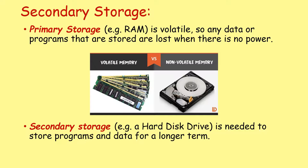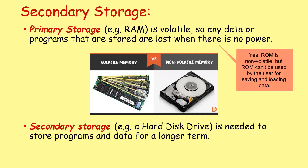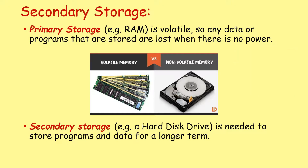So we have to study: why do we need secondary storage? Well, we should remember that your main type of primary storage, your RAM, is volatile. So any data or programs that are stored in RAM are lost when there is no power. Therefore we need storage for programs and data for a longer term that doesn't require that constant supply of power and electricity.